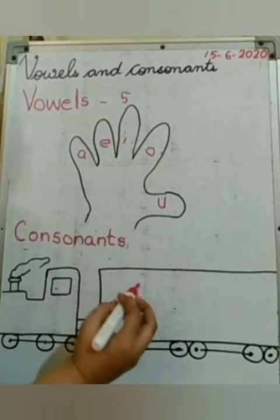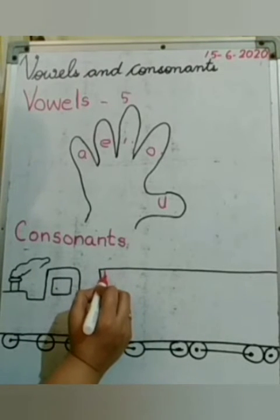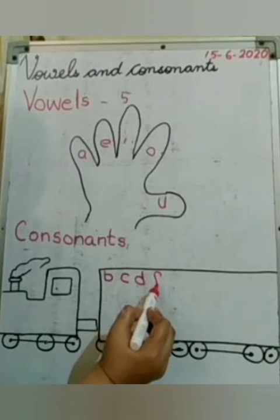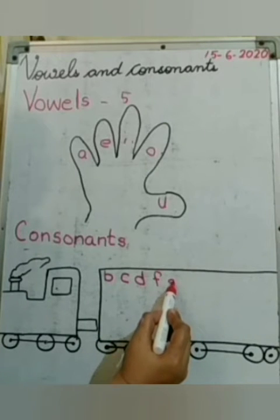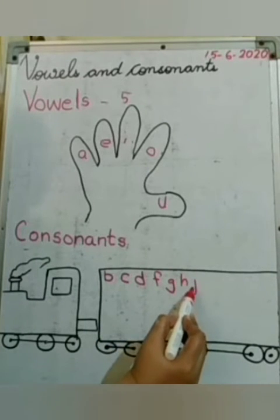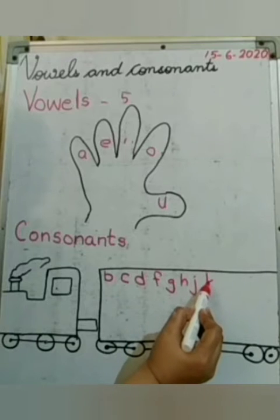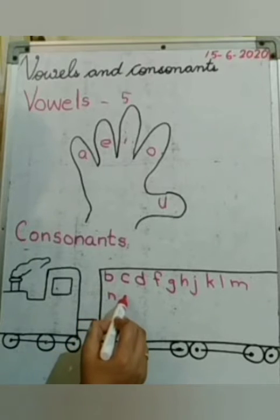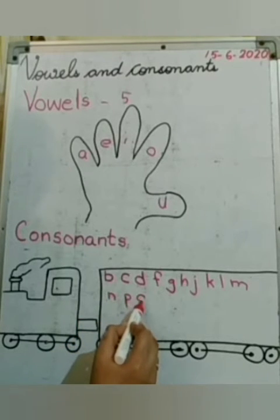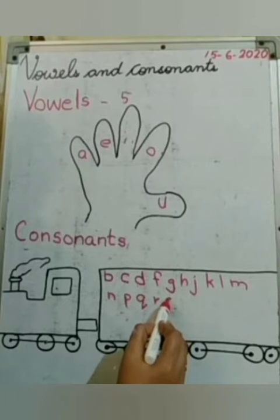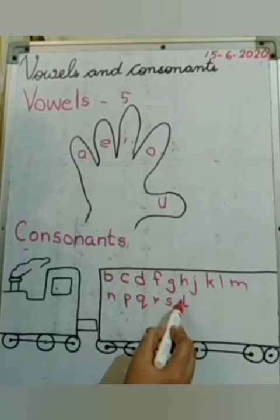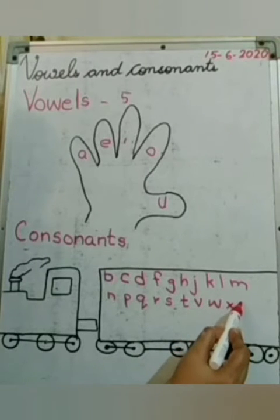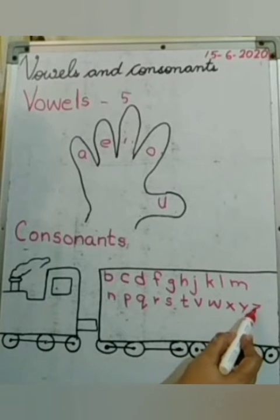What are consonants? Can you name them? B, C, D, F, G, H, J, K, L, M, N, Q, R, S, T, V, W, X, Y, and Z.